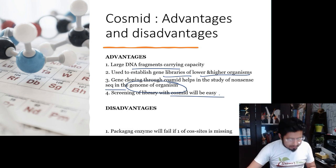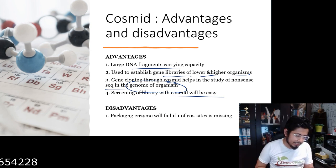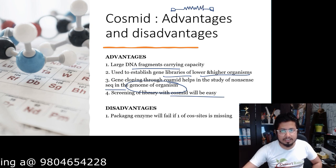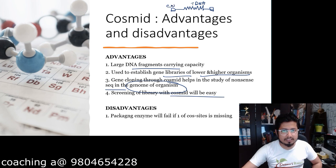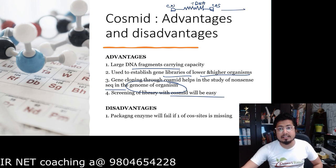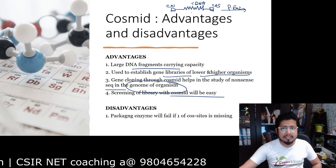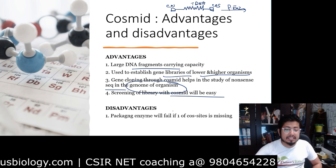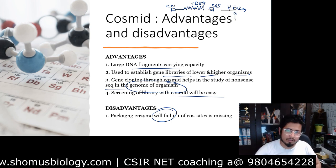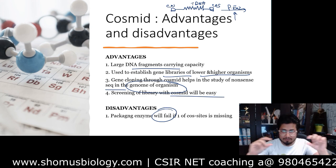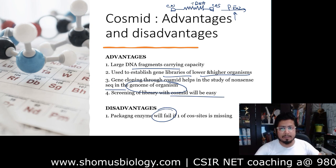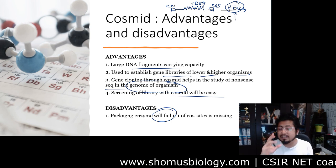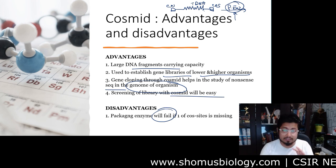The disadvantage involves the packaging enzyme. The packaging enzyme's job is to properly package the target DNA into the phage head. For this to work, cos sites must flank the target DNA at both terminals. If there is only one cos site, the packaging enzyme fails to package the target DNA. The bacteriophage head will be missing the target DNA if only one cos site is present — so the presence of both cos sites is absolutely critical.